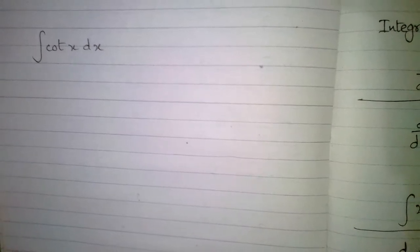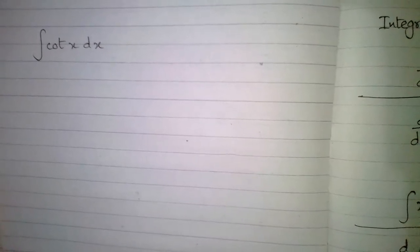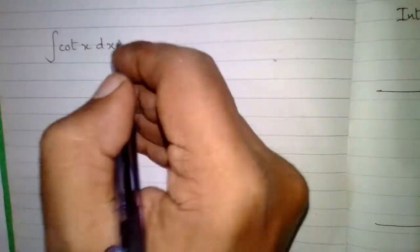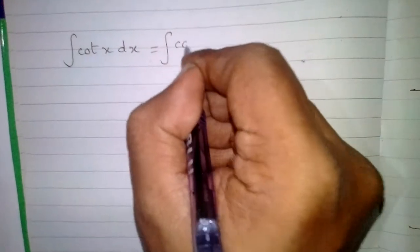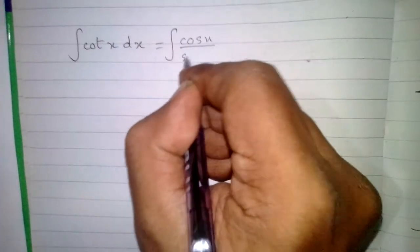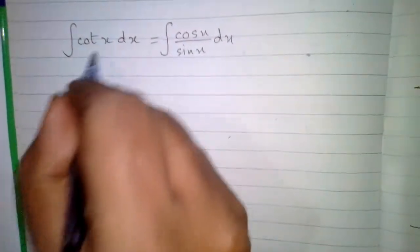In this video we are going to find out the integral of cot x. We know that cot x is equal to cos x upon sin x, so the integral of cot x is equal to integral of cos x upon sin x.